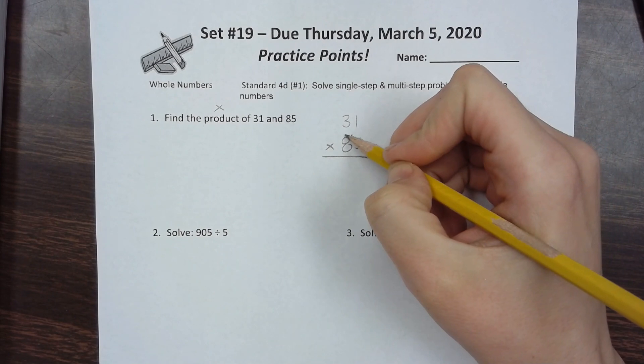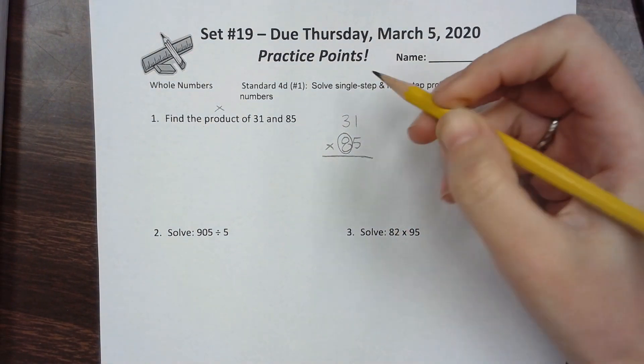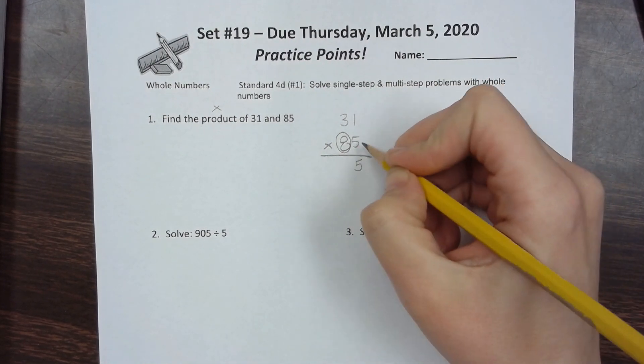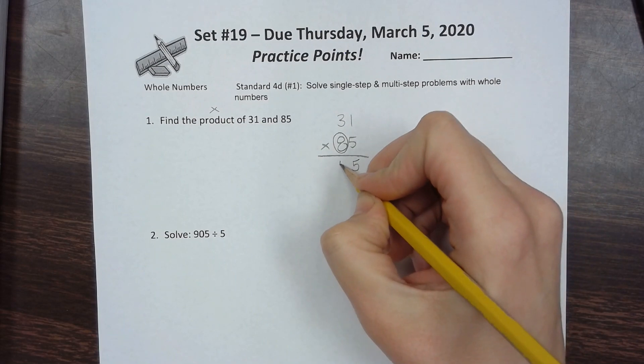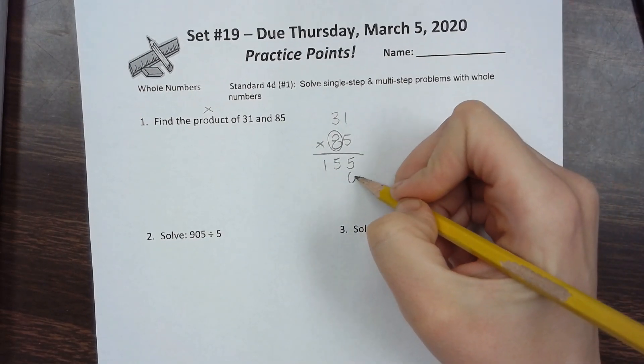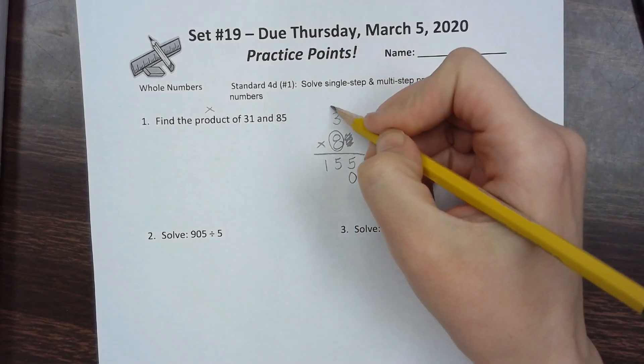We'll circle the tens digit to use it later. Let's start with the ones column: 5 times 1 is 5, 5 times 3 is 15. Now our housekeeping - add a zero at the bottom, cross off the ones place, and cross off anything extra up top.